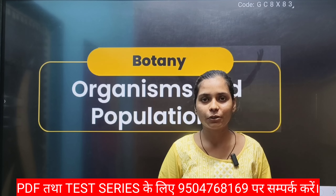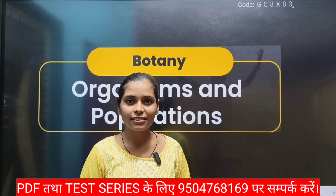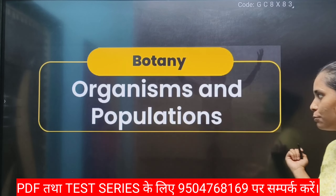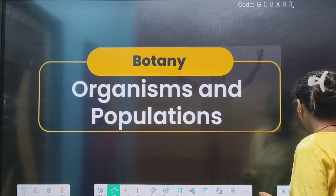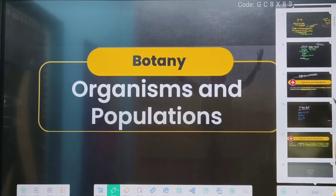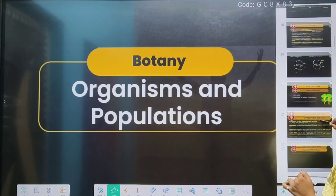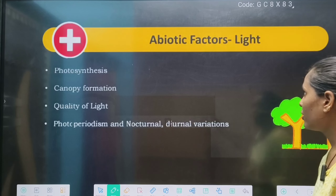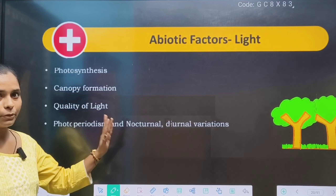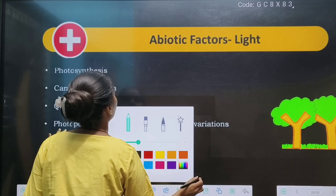Hello everyone, good morning. Welcome back to your YouTube channel Physics by Sanjit Sir. I'm your biology mentor for class 11th and 12th. Class 12th chapter: Organism and Population. Today's topic is the abiotic factor of light. Yesterday we studied the abiotic factor of temperature, and today's topic is the abiotic factor of light.